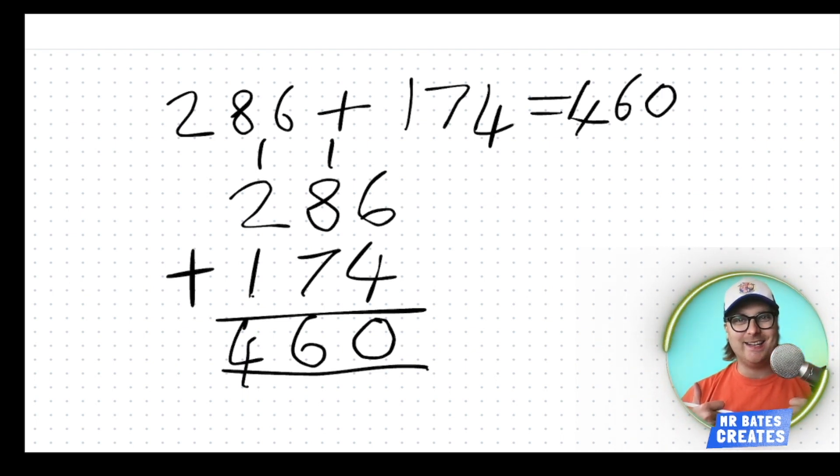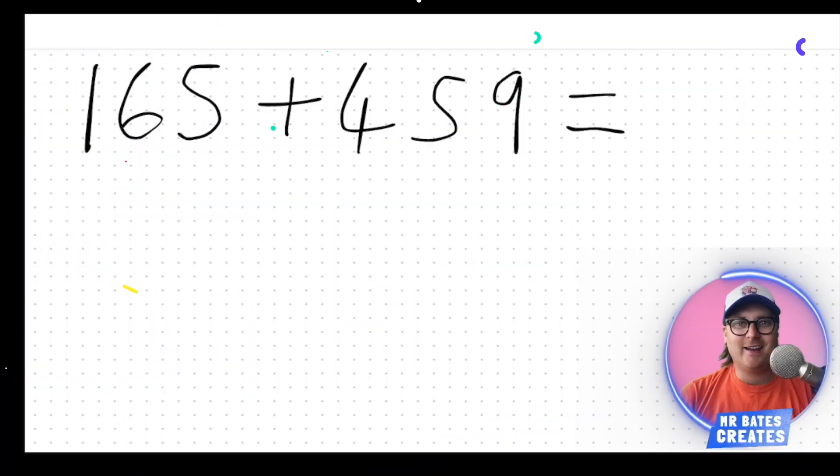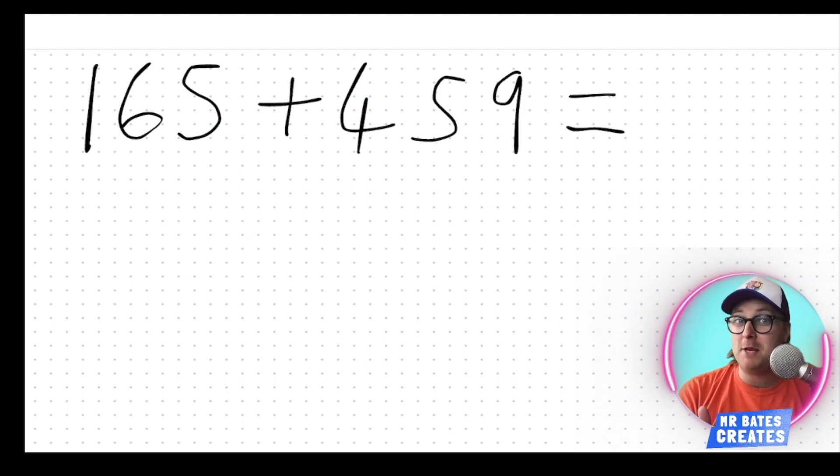Okay, here we go. It's your turn. All you're going to need is a piece of paper or a white board. So we've got 165 plus 459. Now, column addition, always put the biggest number first. Big clue, biggest number first.